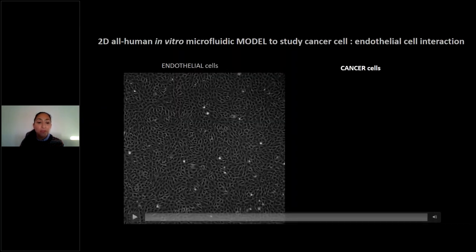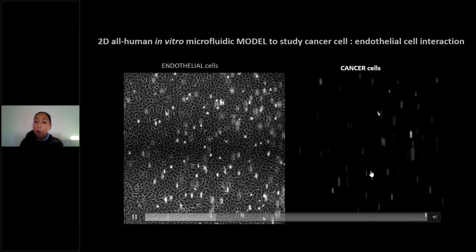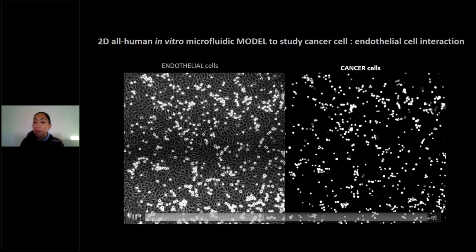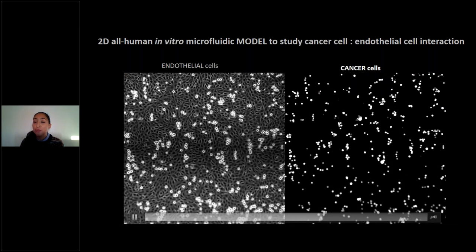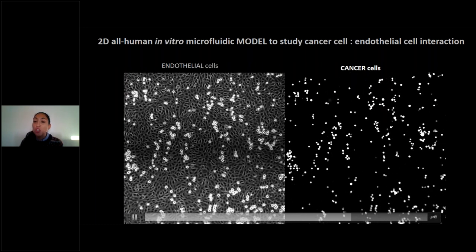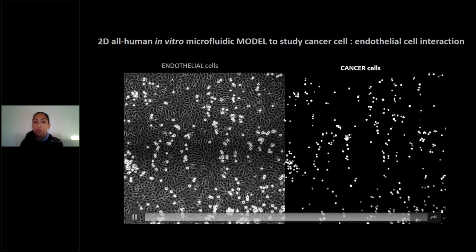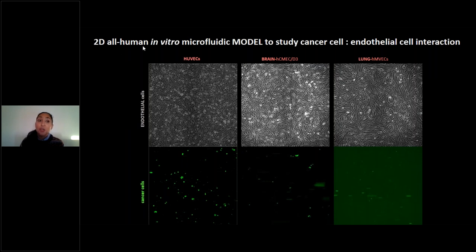On the left you see the endothelial cell monolayer, and on the right cancer cells are flowing in the chamber at low shear stress. During the five-minute accumulation time, cancer cells adhere to endothelial cells. The shear stress is then increased to challenge this adhesion, and the cancer cells that remain are defined as firmly adhered. We routinely use this all-human in vitro microfluidic model to study cancer interaction with different organ-specific endothelium.